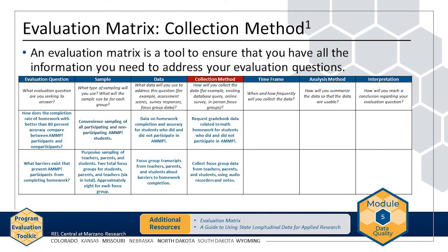Next, consider where you can obtain the data. Consider sources for existing data within your organization, as well as external sources, such as those listed in A Guide to Using State Longitudinal Data for Applied Research, available on the resources page of the website. In the AMP example, the evaluation team may find that teachers have gradebook data related to students' math homework completion for students who did and did not participate in AMP. Because the evaluation team will conduct focus groups with teachers, parents, and students, the team may need transcripts to identify themes related to barriers to math homework completion. If you do not have an interview, focus group, or observation protocol, or a survey to collect the data you need, you will learn the steps for developing or identifying data collection instruments in Module 6.